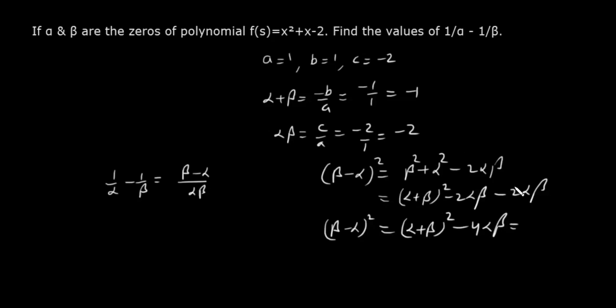Alpha plus beta minus 1 aur alpha beta hai minus 2. Is tarah se yeh ban gaya 1 plus 8, 9 yani beta minus alpha ho gaya 3. Kyunki beta minus alpha whole square ki value hai yeh, to beta minus alpha ho gaya 3. Yahaan par yeh aa gaya 3 aur alpha beta hamein minus 2 diya gaya hai, to answer aa gaya minus 3 by 2. And this is the answer.